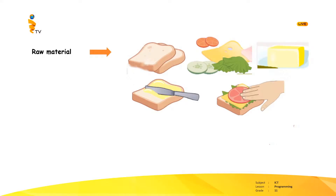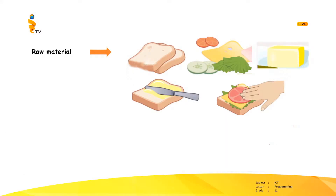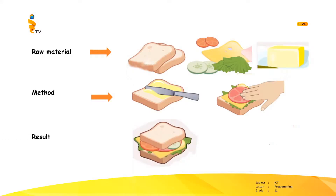When you have added all the fillings on top of the piece of bread, you can add the other slice of bread. We call this the method. After collecting the raw material, we have to do something with the raw material and we call that our method. As the last step, we take the other slice of bread and put it on top of the prepared slice. Now we have a tasty sandwich, and this is our result.